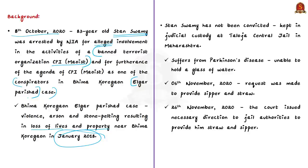According to NIA, this violence is a result of the provocative speeches during the organization of the Elgar Parishad program at Shanwarwada in Pune on 31st December 2017. This matter is being dealt by the NIA Special Court. Till now, the arrested individual has not been convicted by the court and he is kept in judicial custody at a central jail in Maharashtra.